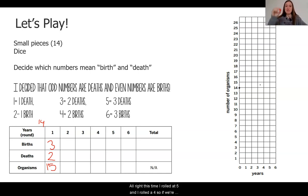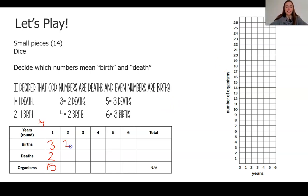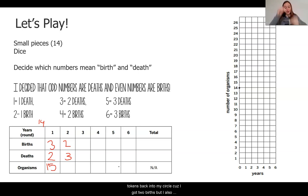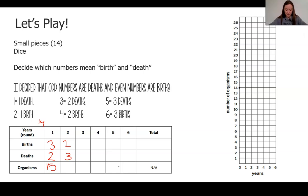This time I rolled a 5 and I rolled a 4. If we're looking at the key, a 4 means that I have 2 births and a 5 means that I have 3 deaths. I'm going to add 2 tokens back into my circle because I got 2 births, but I also have to take out 3 organisms because I had 3 deaths. Let's count it up — it looks like I only have 14 organisms this time in my population circle.